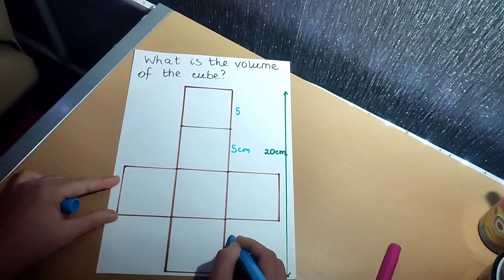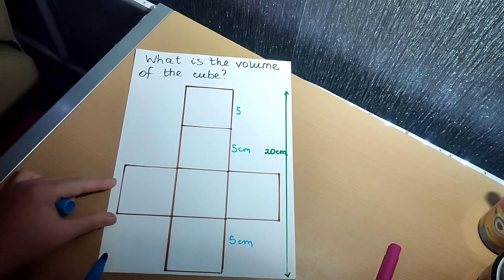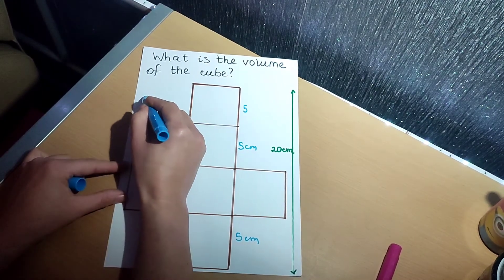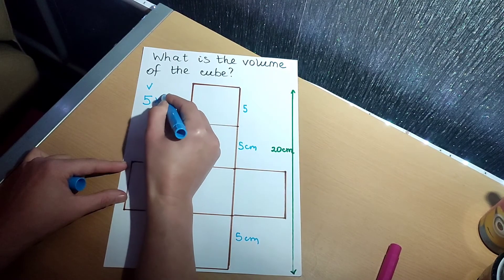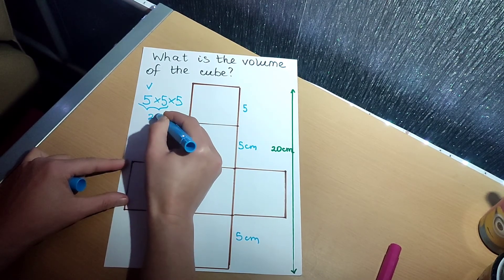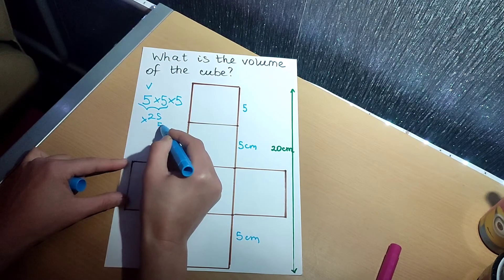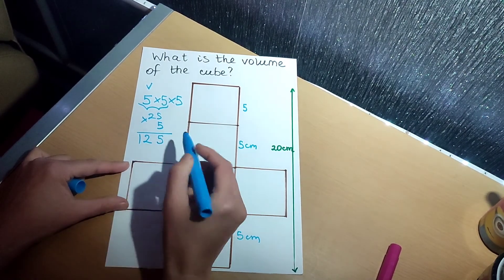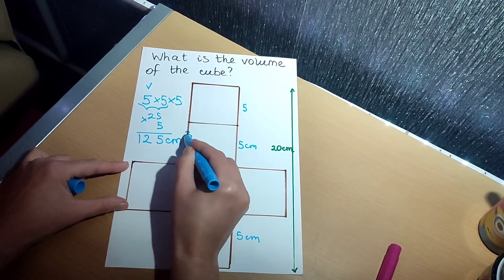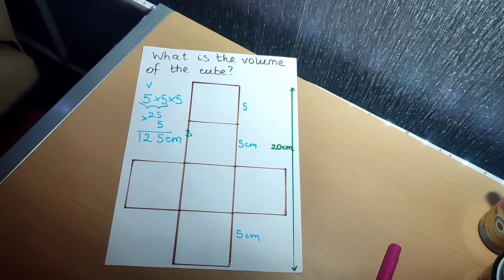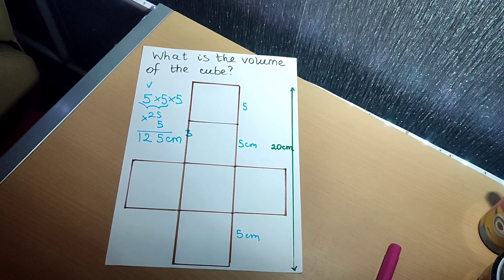Now all three dimensions are 5 centimeters. So the volume is 5 times 5 times 5: 5 times 5 is 25, multiplied by 5 gives 125 centimeters cubed. If you can't do it in your head, use column multiplication. And don't forget your centimeters cubed, because we're measuring the space inside the shape with tiny little cubes. I hope this was helpful for you!